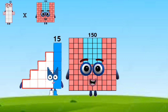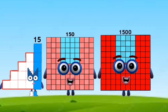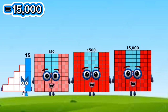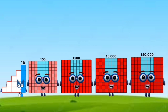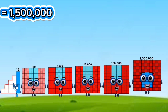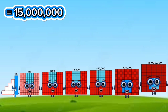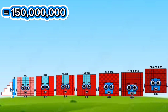10 times 15 to 150,000,000. 10 times 15 equals 150. 10 times 150 equals 1,500. 10 times 1,500 equals 15,000. 10 times 15,000 equals 150,000. 10 times 150,000 equals 1,500,000. 10 times 1,500,000 equals 15,000,000. 10 times 15,000,000 equals 150,000,000.